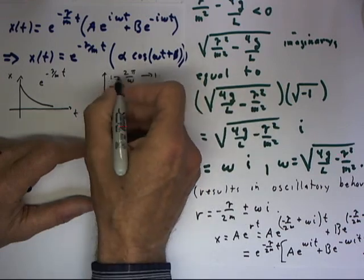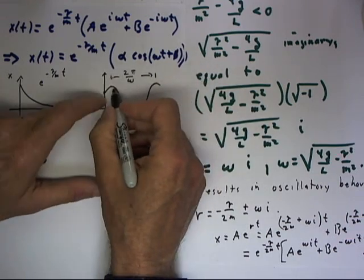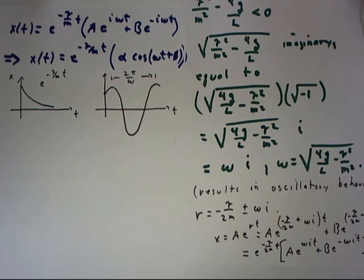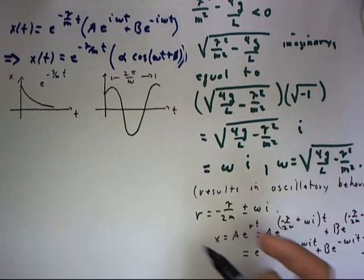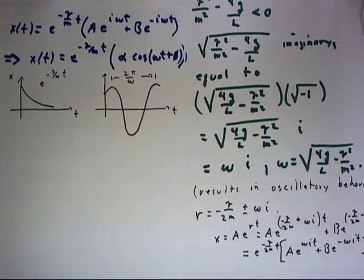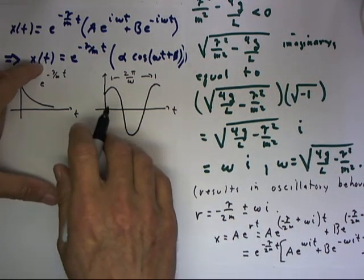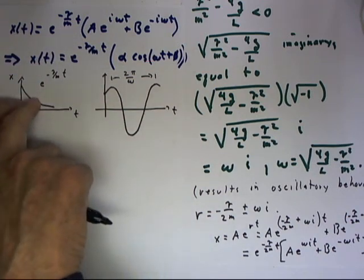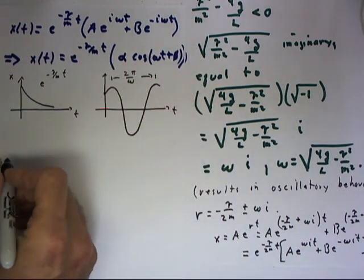The period of the function from here to here is just 2 pi over omega. Of course, this axis being the t, that means that our period of the function will be 2 pi over omega measured in units of time. Our x function is going to be the product of a function of this nature and a function of this nature.